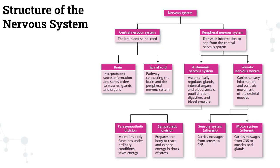Now that we've discussed the neuron — the building block of the nervous system — let's discuss the divisions of the nervous system. The nervous system is primarily divided into two major divisions: the central and the peripheral nervous system. The central nervous system is composed of the brain and the spinal cord. The brain interprets and stores information as well as sends signals to muscles, glands, and organs. The spinal cord is the pathway or bridge connecting the central nervous system and the peripheral nervous system.